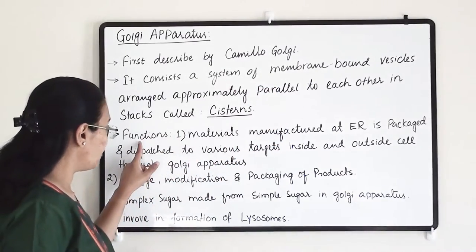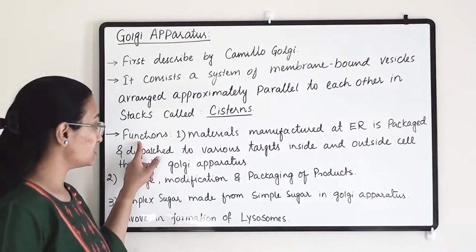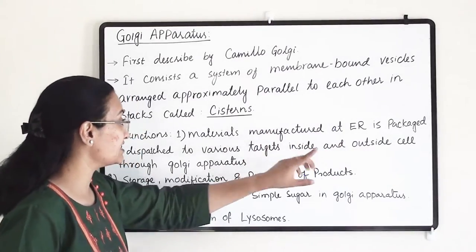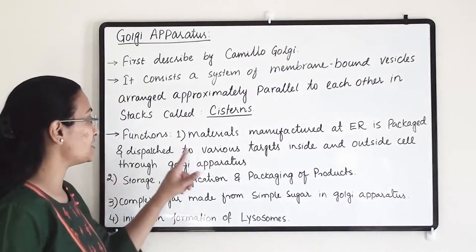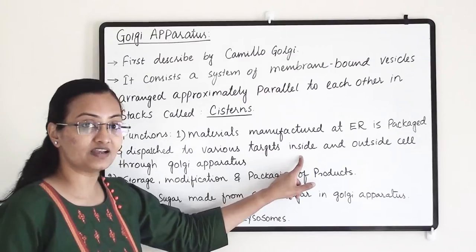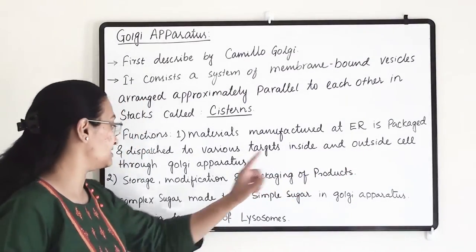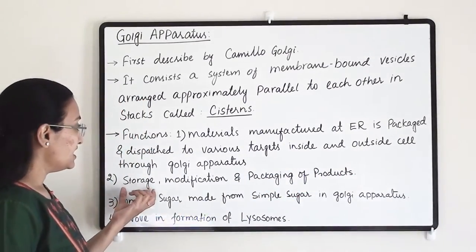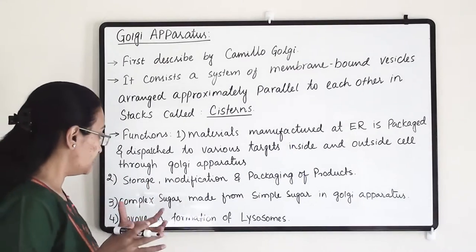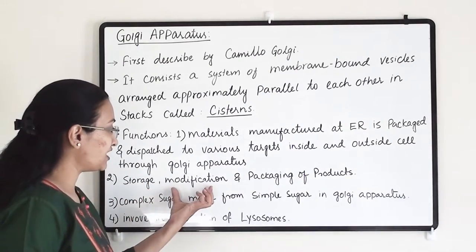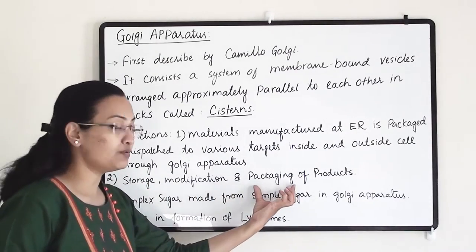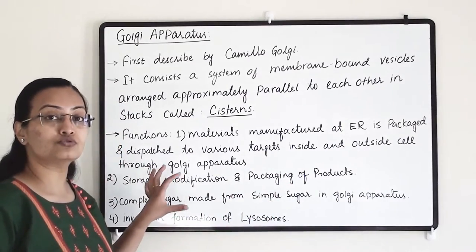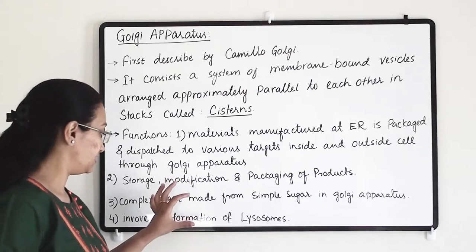The first function of the Golgi apparatus is that materials manufactured at the ER are packaged and dispatched to various targets inside and outside the cell. The second function is that these materials require storage, modification, and packaging of the product, and all three of these processes also happen at the Golgi apparatus.